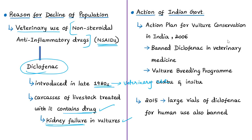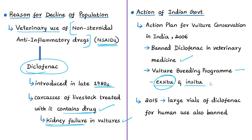Because of this, the Government of India banned the use of diclofenac in veterinary medicine. The government also initiated a vulture breeding program for ex-situ conservation and enhanced in-situ protection of remaining vulture populations. Ex-situ conservation is the conservation of species outside their natural habitats, and in-situ conservation is within their natural habitats. This conservation action was done through the 2006 Action Plan for Vulture Conservation in India, drafted by the Ministry of Environment, Forests and Climate Change.